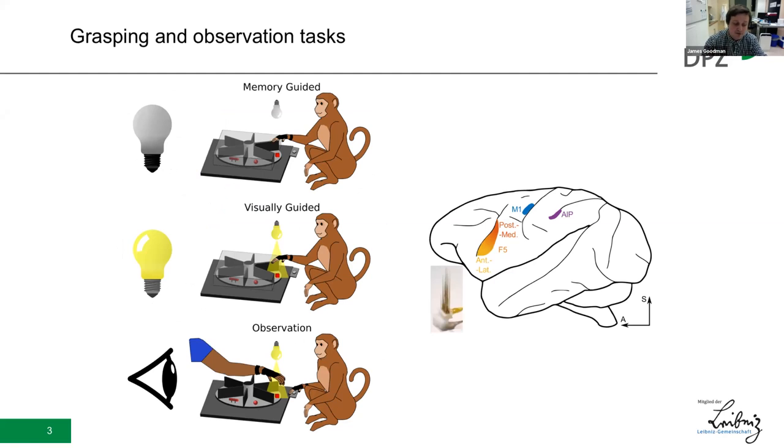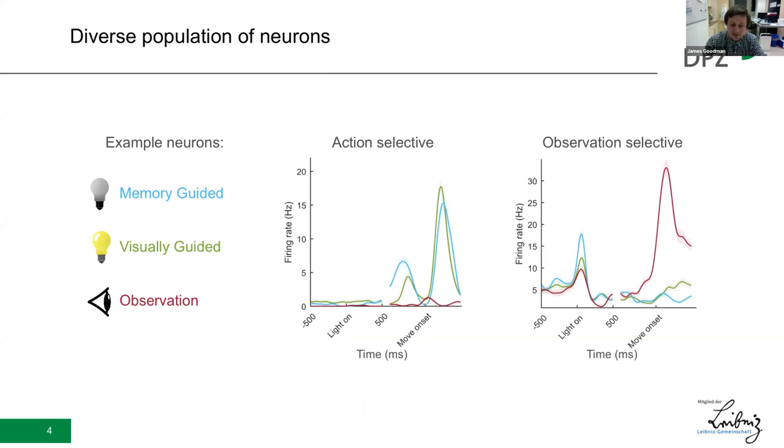However, another major line of research in this network involves how neurons in these areas respond during the mere observation of action, responses which are thought to indicate a sort of motor simulation. We sought to apply population analysis to this thread of grasping research, which to date has been scarce. To this end, we trained monkeys to perform a grasping task in two different contexts, memory guided, which is in the dark, and visually guided in the light. We also trained animals to hold still and watch a human experimenter grasp the same object. We presented a wide variety of different objects to elicit different grips, and we used floating microelectrode arrays to record from the three major nodes of the frontoparietal network.